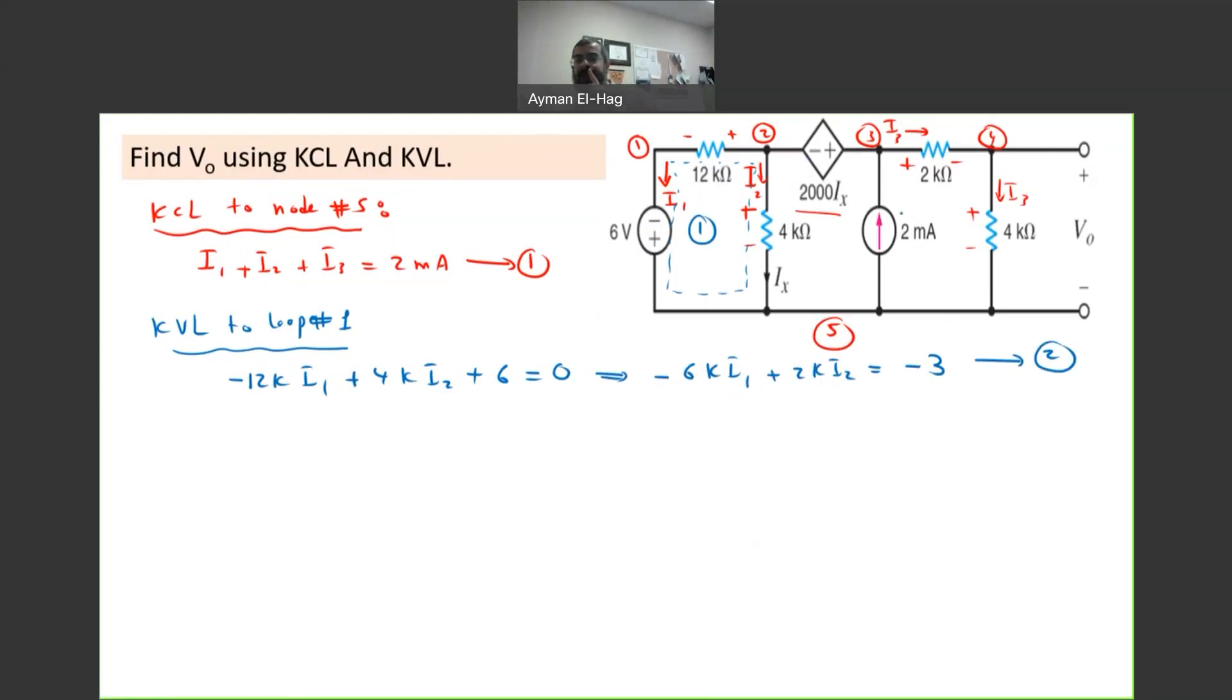I will take a loop but I will not include the current source in the loop. Why? Because I have to add another unknown, so that will increase the size of the problem. The more concise my problem, the less the number of variables I have, the better. Because I will need only this number of equations. So I will take this loop that doesn't have any current source, only voltage sources. I will call this loop number 2.